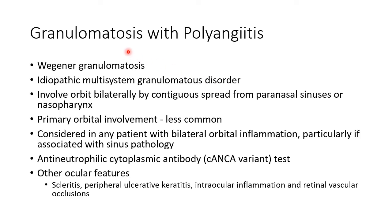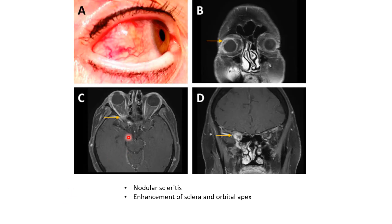Granulomatosis with polyangiitis, also known as Wegener's granulomatosis, is an idiopathic multisystem granulomatous disorder. It can involve the orbit bilaterally by contiguous spread from paranasal sinuses or nasopharynx; primary orbital involvement is less common. It should be considered in any patient with bilateral orbital inflammation, particularly if associated with sinus pathology. C-ANCA (anti-neutrophilic cytoplasmic antibody) testing can confirm the diagnosis. Other ocular features include scleritis, peripheral ulcerative keratitis, intraocular inflammation, and retinal vascular occlusions. A clinical picture shows nodular scleritis with enhancement of the sclera and orbital apex on MRI.